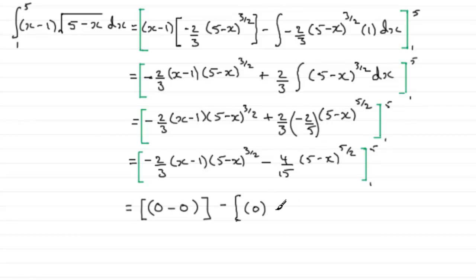And then we've got minus and if we put 0 in, sorry, if we put 1 I should say into here, I'm getting too happy with these 0's I think. If I put 1 through here, we've got 5 take 1 which is 4. 4 to the power 5 over 2 then is going to be there. So 4/15 multiplied by 4 to the power 5 over 2.